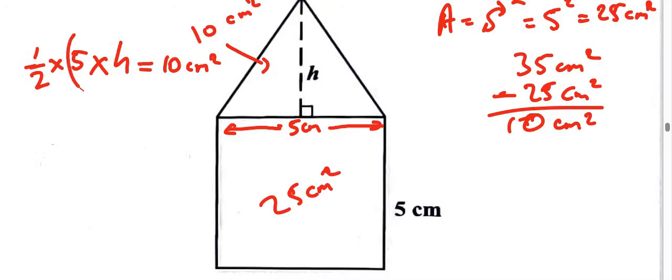Alright, half times what gives us 10? Half of 20 is equal to 10. So that tells us that 5 times the number, 5 times what number gives us 20? Must be 5 times 4. So the height must be 4. So h is equal to 4.